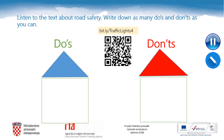Dear students, I would like you to pause the video lesson once again. Open your notebooks. You're going to listen to a text about road safety. Listen carefully and then write down as many do's and don'ts as you can. In order to listen to the text, please write bit.ly/trafficlightsfour in your browser, or you can use your QR code scanner. Are you ready? Excellent. Now let's start.